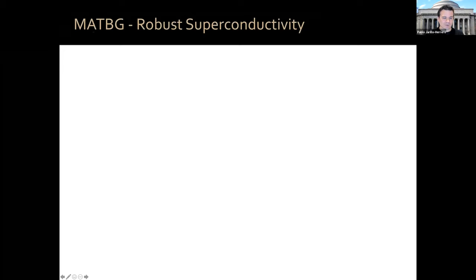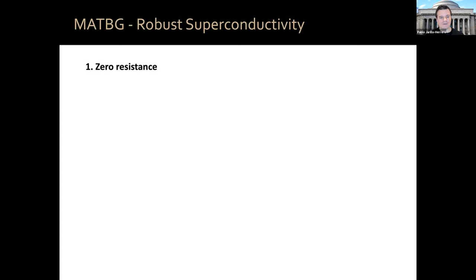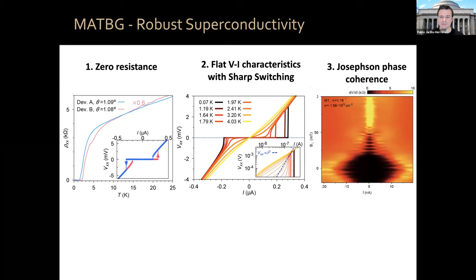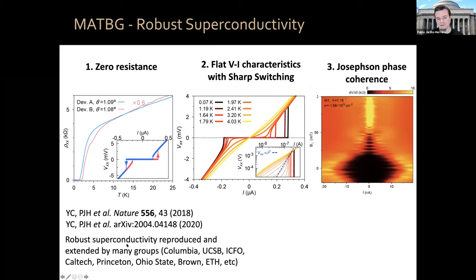Magic angle twisted bilayer graphene is the only system where robust superconductivity has been reproduced by many groups. The marks of superconductivity include flat voltage-current bias characteristics with a sharp switching to the normal state, and more importantly, Josephson phase coherence, clearly establishing superconducting behavior. This has been reproduced by many groups: Columbia, UCSB, ICFO, Caltech, Princeton, Ohio State, Brown, ETH, Stanford, and many more all over the world.